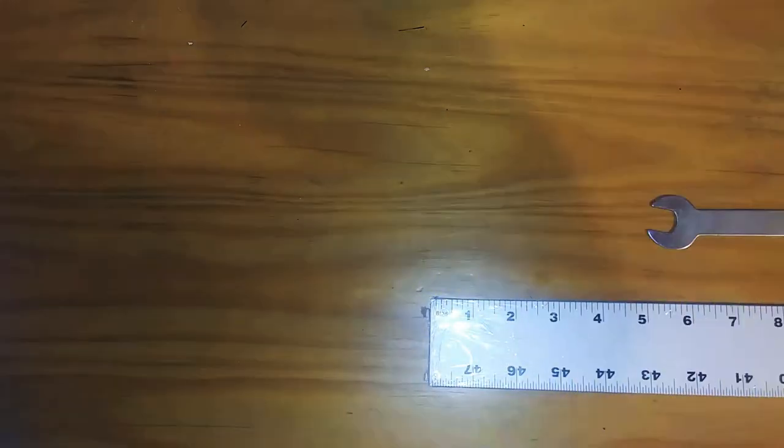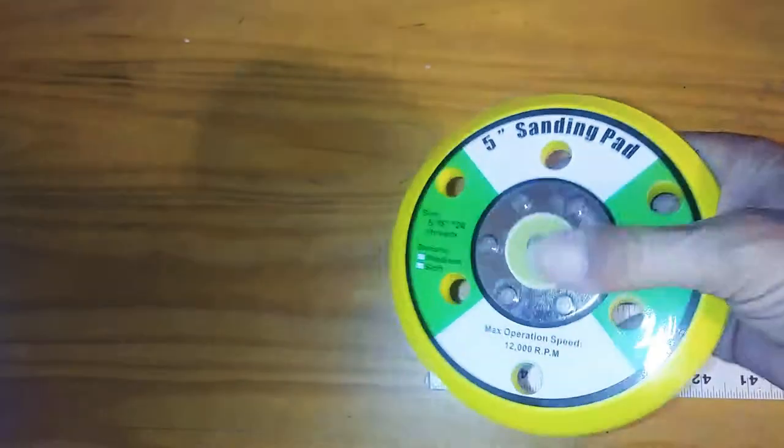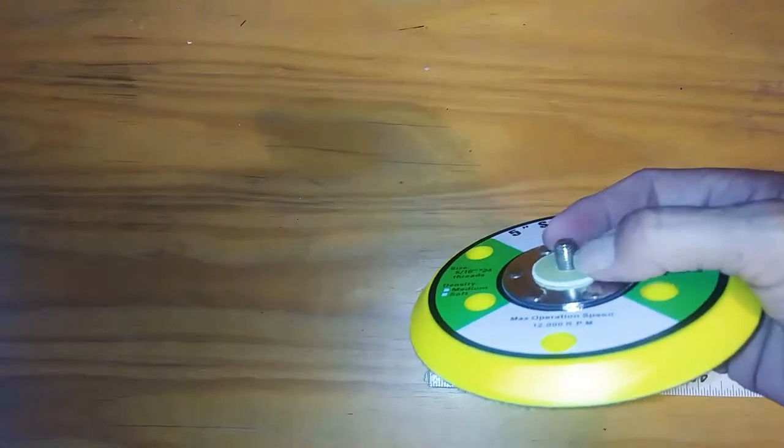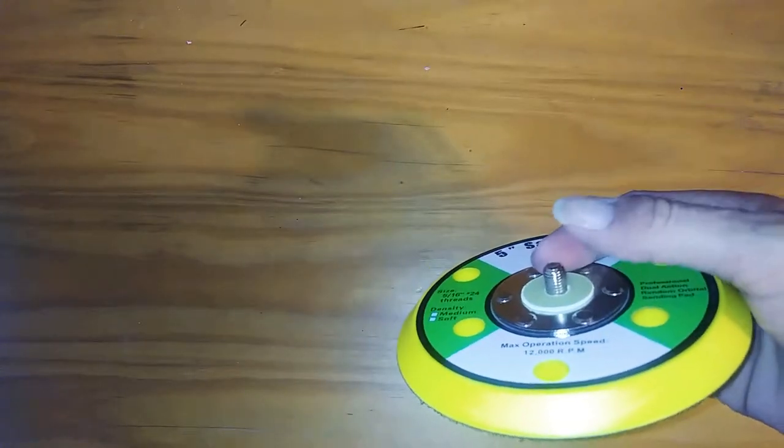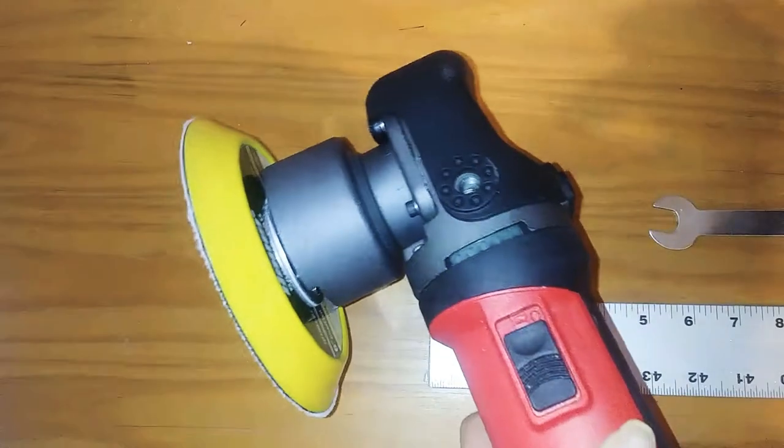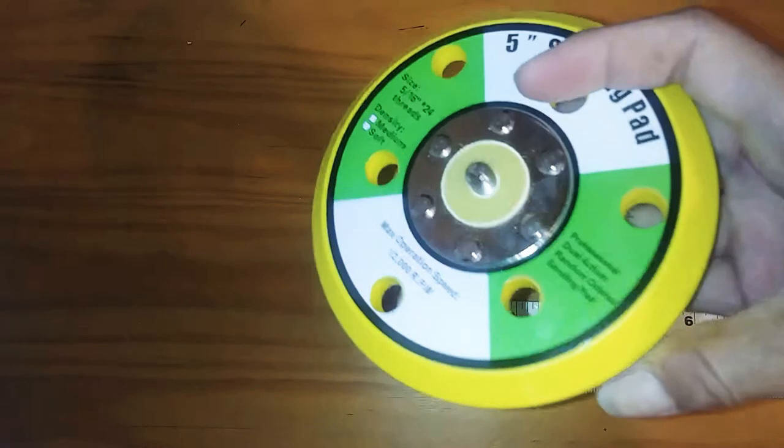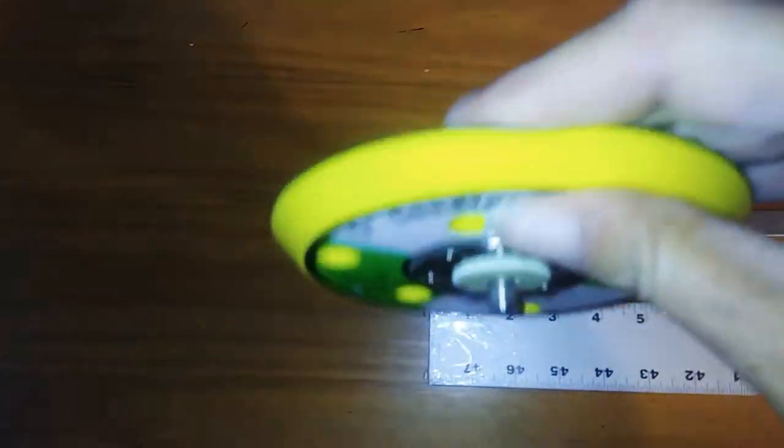This thread size fits just about any DA buffer that's like this. This is a Bauer from Harbor Freight. It's really nice, and this has a little backing pad in it. It's a five-inch.